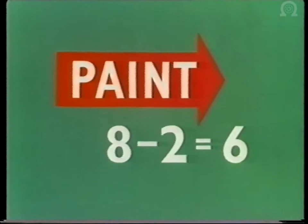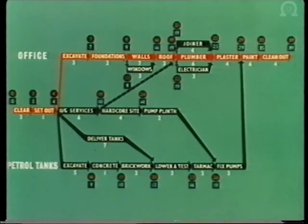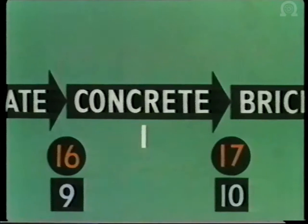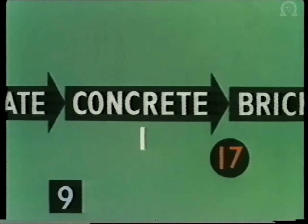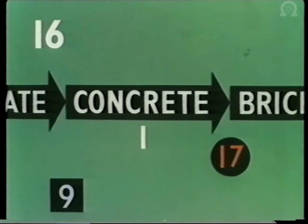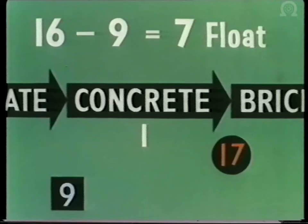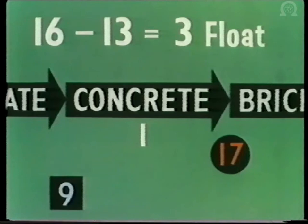Now the CP diagram for the job is complete. Any operation not on the critical path has spare time for its completion. This spare time, or float, is important. Take concreting the petrol tanks, for example: the job must be finished by day 17, its duration is 1, so its latest time for starting is day 16. But the earliest starting time is day 9, so there are 7 days spare time, or float, for this operation, assuming it starts at the earliest possible time. If it starts later, some of this spare time would have been used up on previous jobs. If it is delayed until the last possible moment, all the float will have been used up, which could have been available for later jobs in the sequence.